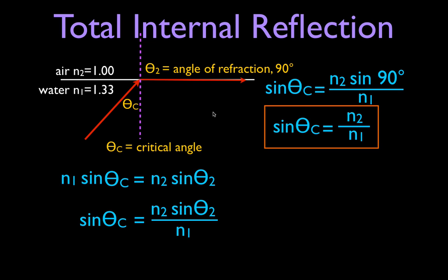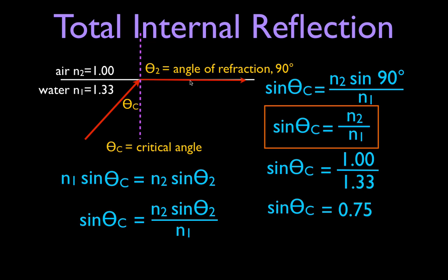So let's calculate the critical angle — what angle do we need to get the light ray to travel right along that surface and get an angle of refraction of 90 degrees? Let's plug the numbers in. The sine of theta C equals N2, which is the index of refraction of air (1.00), divided by N1, which is the index of refraction of water (1.33). Dividing those two, we get that the sine of the critical angle is 0.75. That's not the critical angle itself — I have to use the inverse sine function on my calculator to find what angle has that sine.